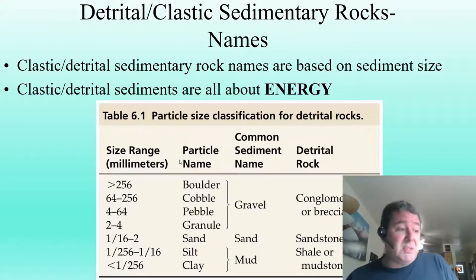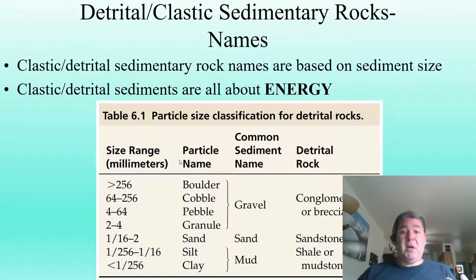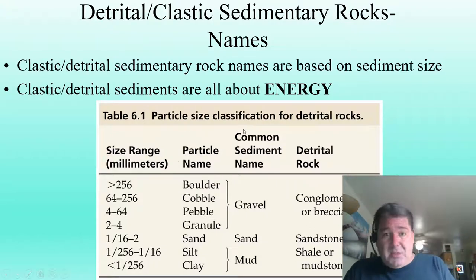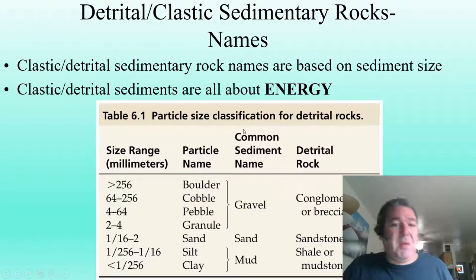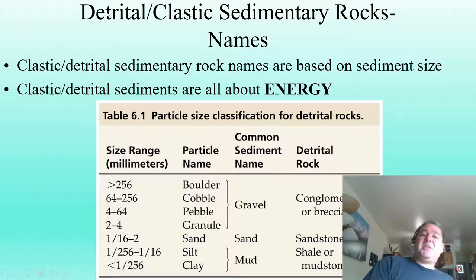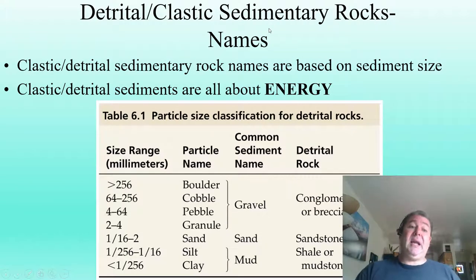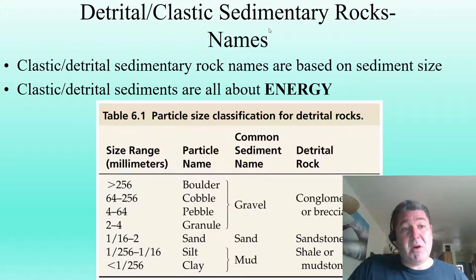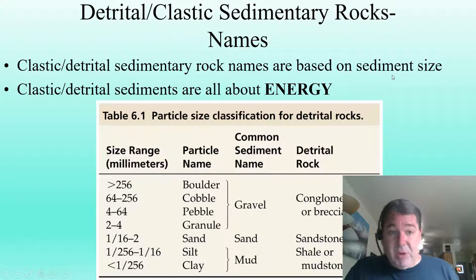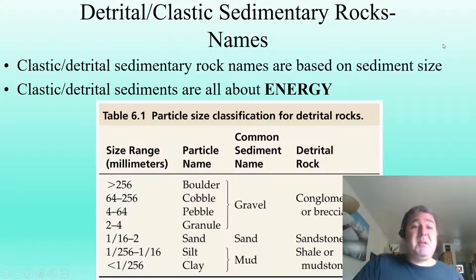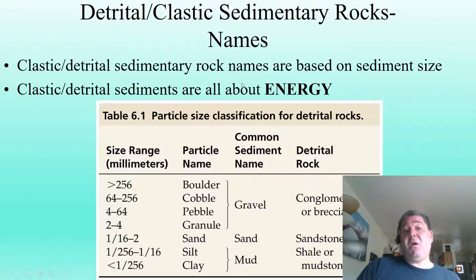Unlike the other rocks we've talked about — where we worried about mineralogy for igneous rocks and metamorphic rocks — when we're talking about detrital or clastic sedimentary rocks, we are not as concerned about mineralogy as we are with sediment size. Clastic sedimentary rocks are classified primarily based on sediment size.